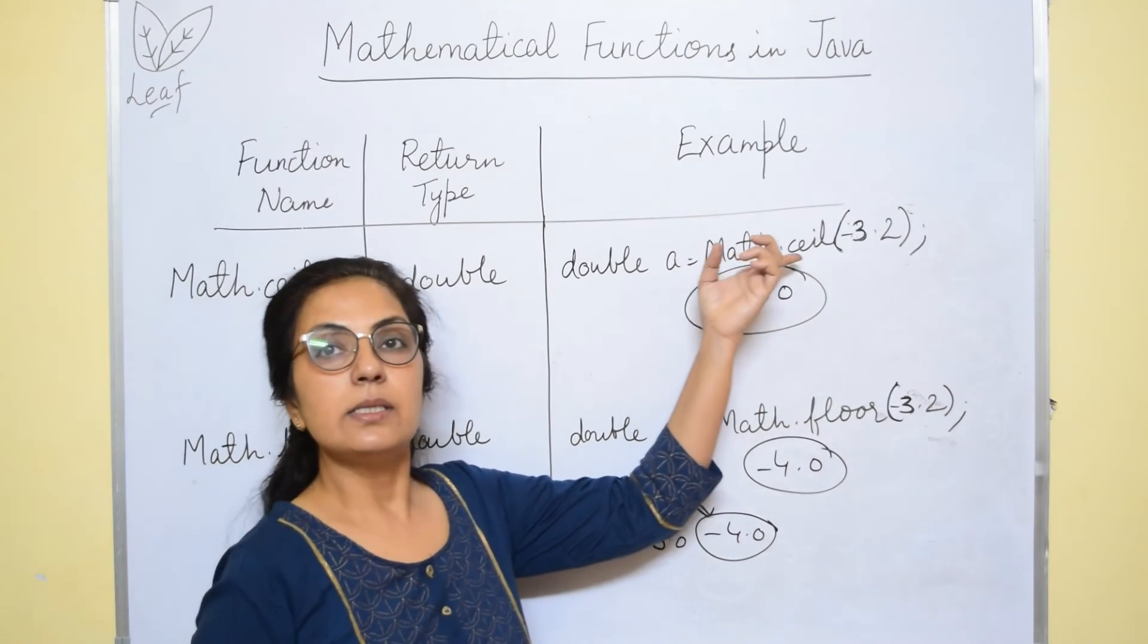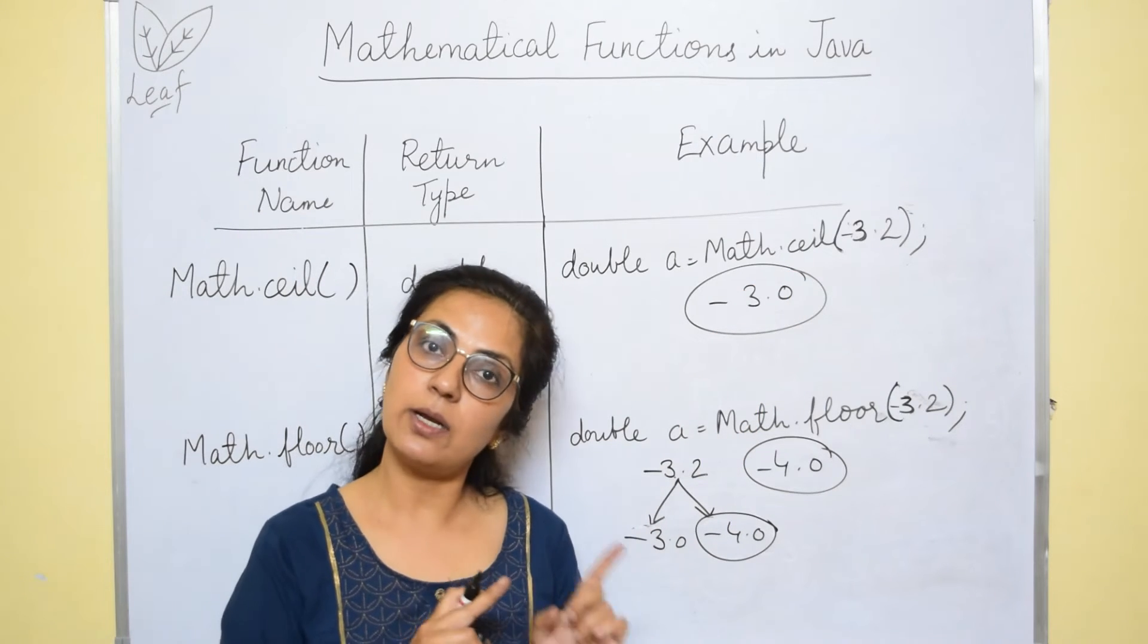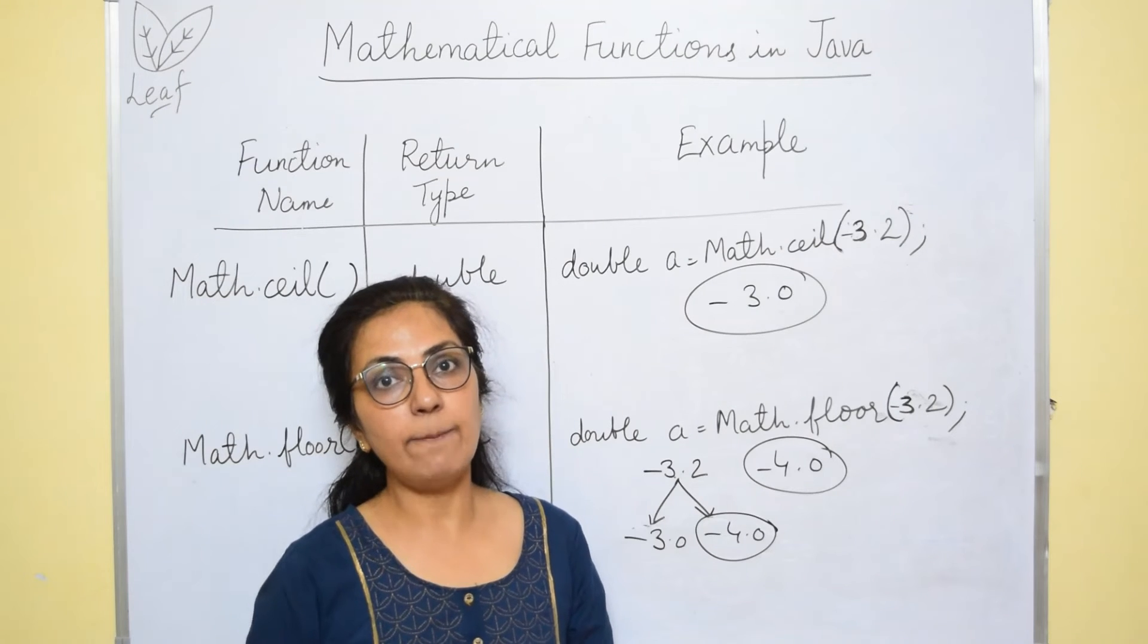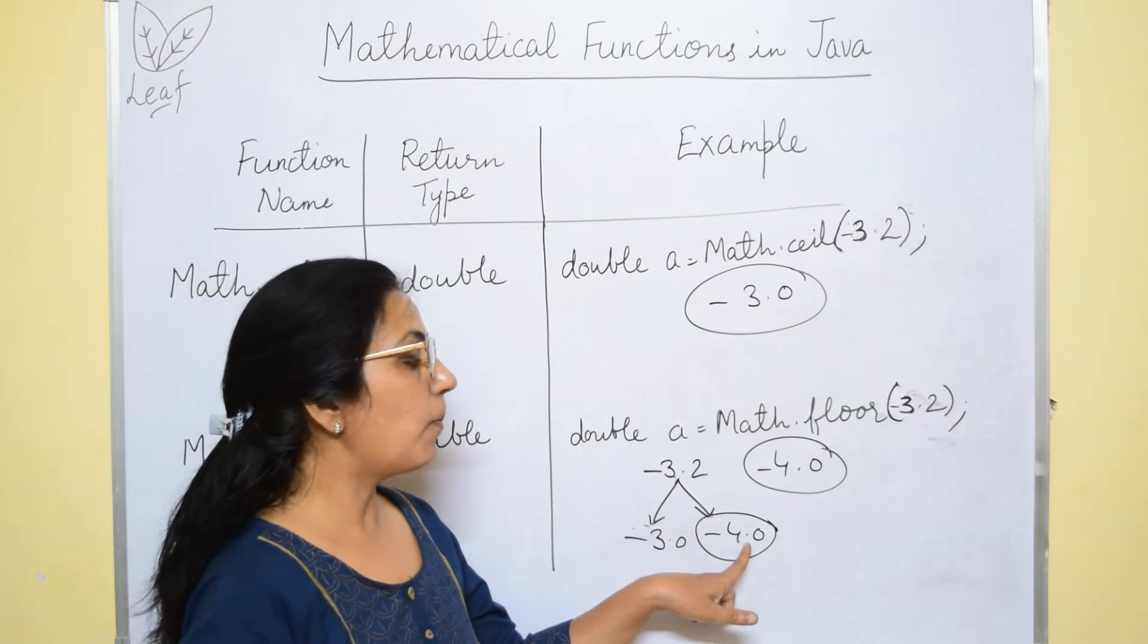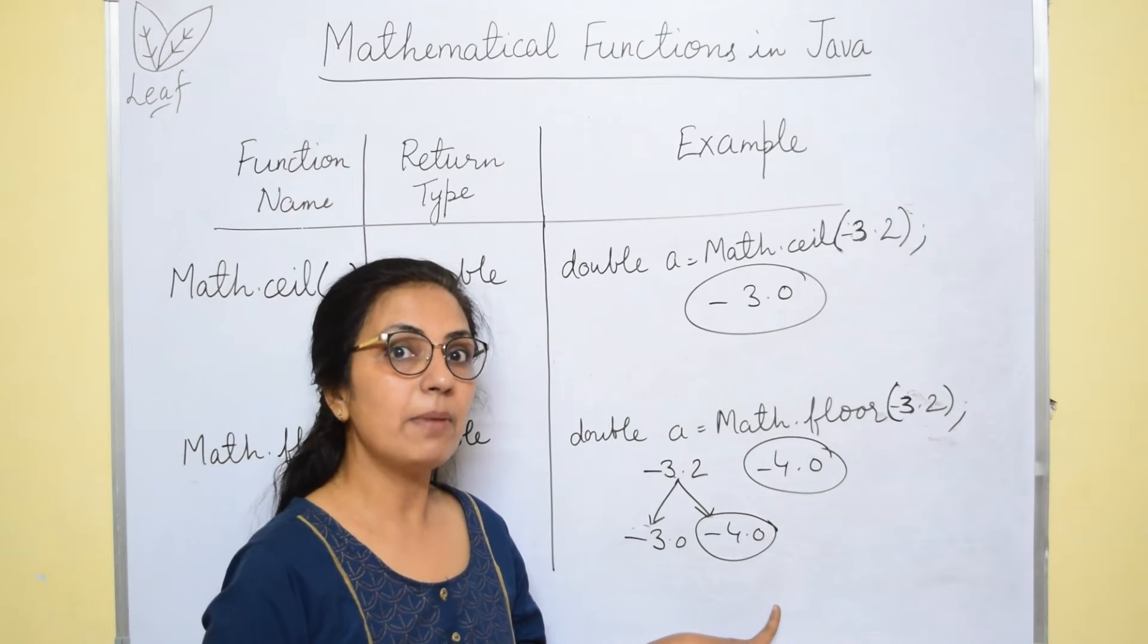Remember ceil function returns the nearest highest integer and floor function returns the nearest lowest integer but return type is double. So always you will write the answer 0.0. Whatever answer you are getting, 0.0 should be mentioned.